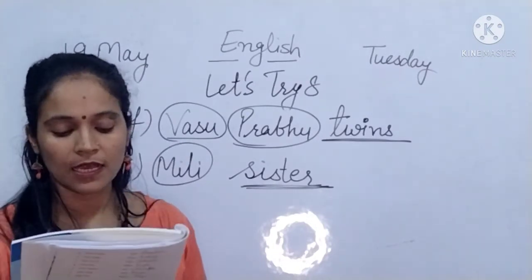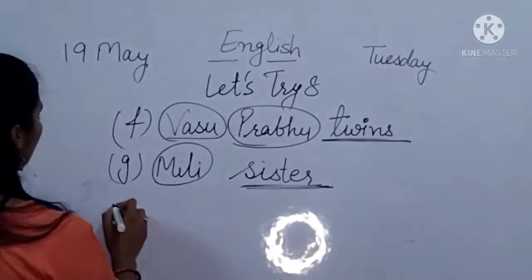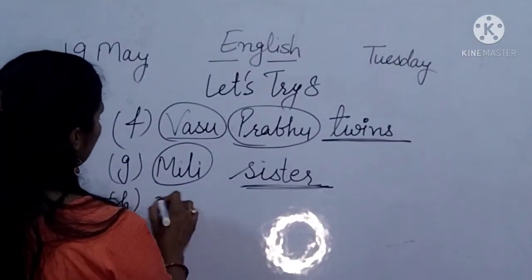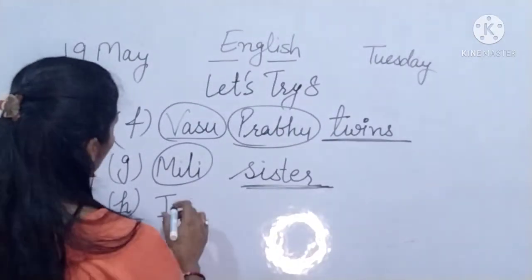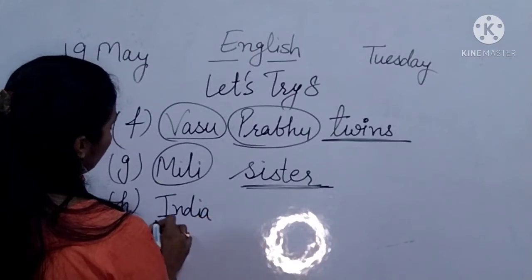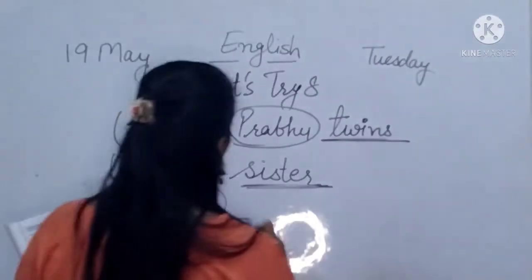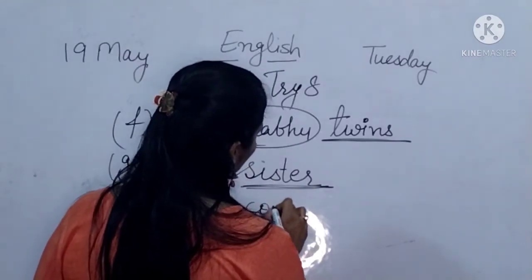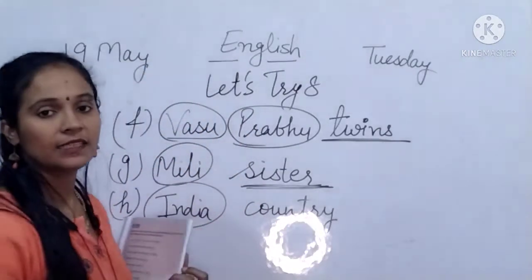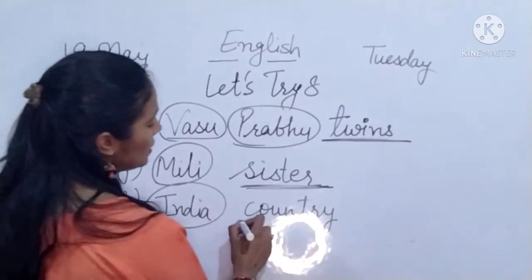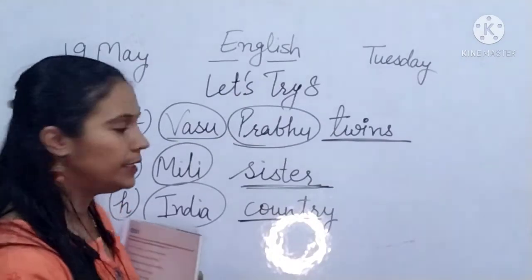Sentence H: India is a beautiful country. India is the name of our country — circle India, it is a proper noun. And the common naming word in this sentence is country — underline the country.